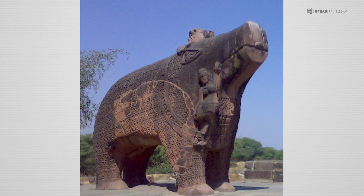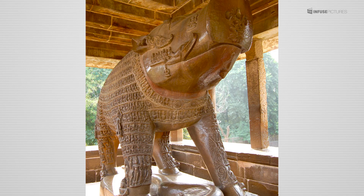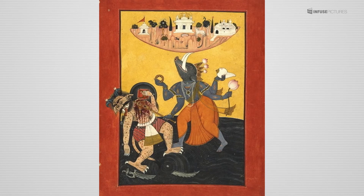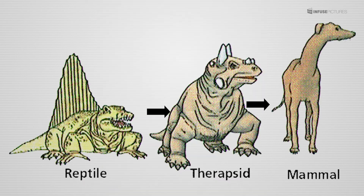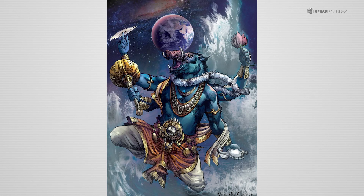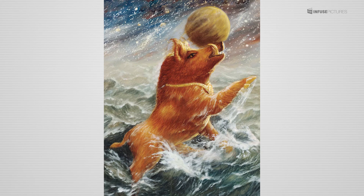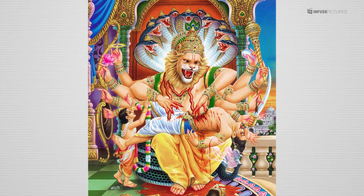Then came terrestrial creatures. They were initially four-legged animals roaming on the earth. A wild boar, the Varaha avatar, reveals this stage of evolution. The theory of evolution says reptiles evolved into semi-amphibians and then into mammals and land animals in the Triassic period. The Varaha avatar in Satya Yuga signifies the birth of the mammal.